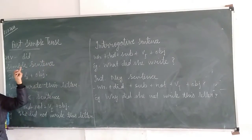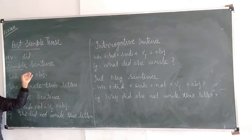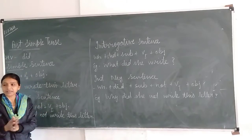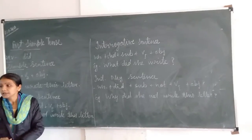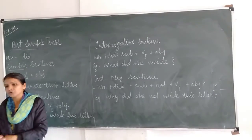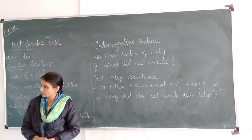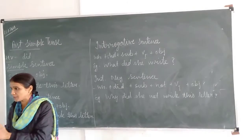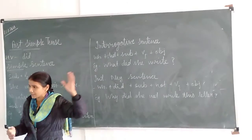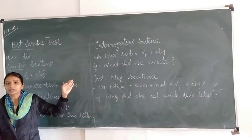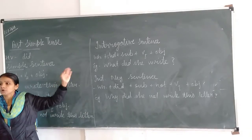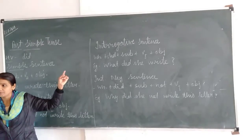Did is the helping verb of past simple tense. And like present simple tense, in negative, introvertive and exovertive negative sentences, we were using the helping verb. So like this, here also in simple sentences we will not use this helping verb.